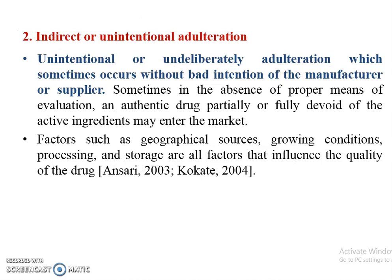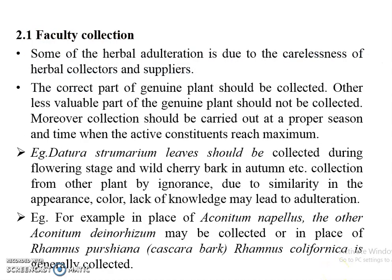The second class is indirect or unintentional adulteration — adulteration which sometimes occurs without bad intention of a manufacturer or supplier. Sometimes, in the absence of proper means of evaluation, an authentic drug partially or fully devoid of active ingredients may enter the market. Factors such as geographical sources, growing conditions, processing, and storage all influence the quality of a drug. One example is adulteration due to carelessness of herbal collectors and suppliers.